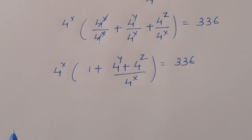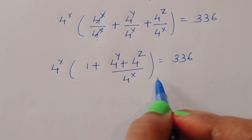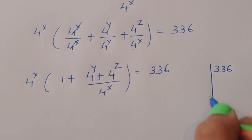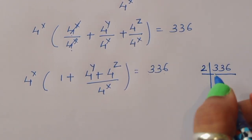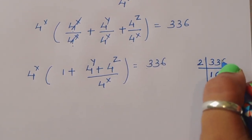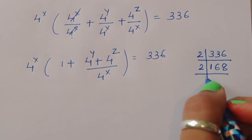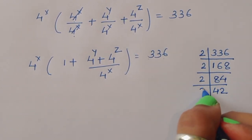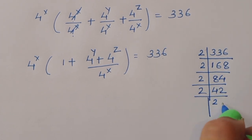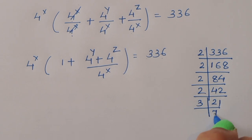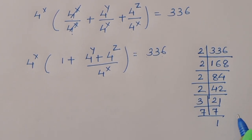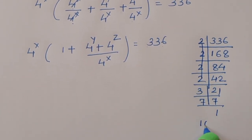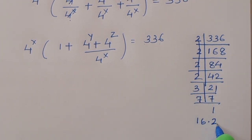Now we can find the factor of 336. Taking the prime factorization of 336: 2×168, 2×84, 2×42, 2×21, and 21 = 3×7. So 2×2×2×2 = 16, and 3×7 = 21. Therefore 336 = 16 × 21. This is the factorization of 336.